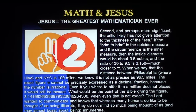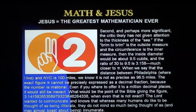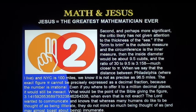When we say that the distance from Philadelphia, where I live, to New York is 100 miles, we know it is not as precise as 96.5 miles. The exact figure pi cannot be precisely expressed as a decimal fraction because the number is irrational. Even if you were to offer it to a million decimal places, it would still be inexact. What would be the point of the Bible giving such a figure, when even that is not exact? The Lord wanted to communicate, and knows that whereas many humans do not like to be thought of as illiterate, they do not mind so much being thought of as innumerate.